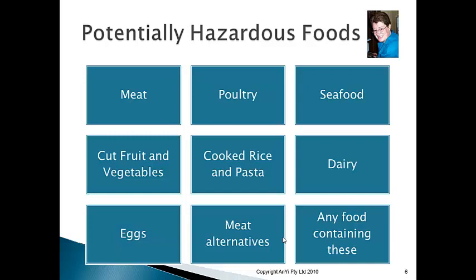These are the nine potentially hazardous foods: meat, poultry, seafood, cut fruit and vegetables, cooked rice and pasta, dairy foods, eggs, meat alternatives, and any food containing these. Meat alternatives — such as soybeans, tofu, and gluten — are used by vegetarians as secondary protein sources instead of animal products.